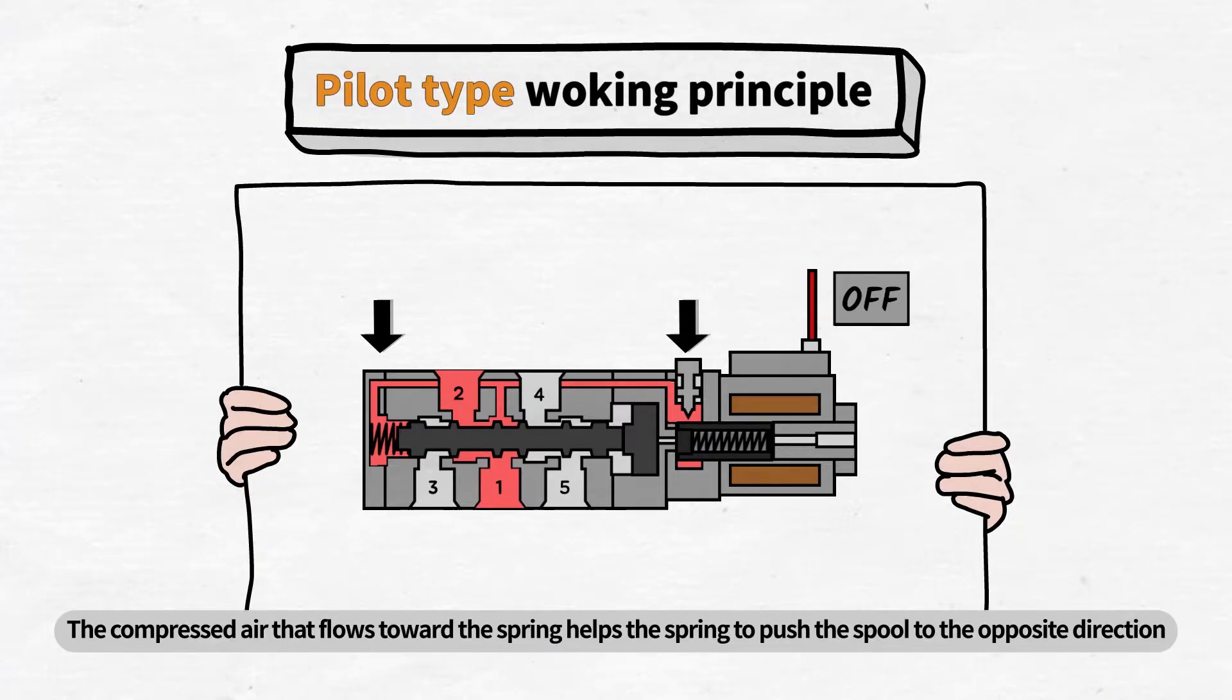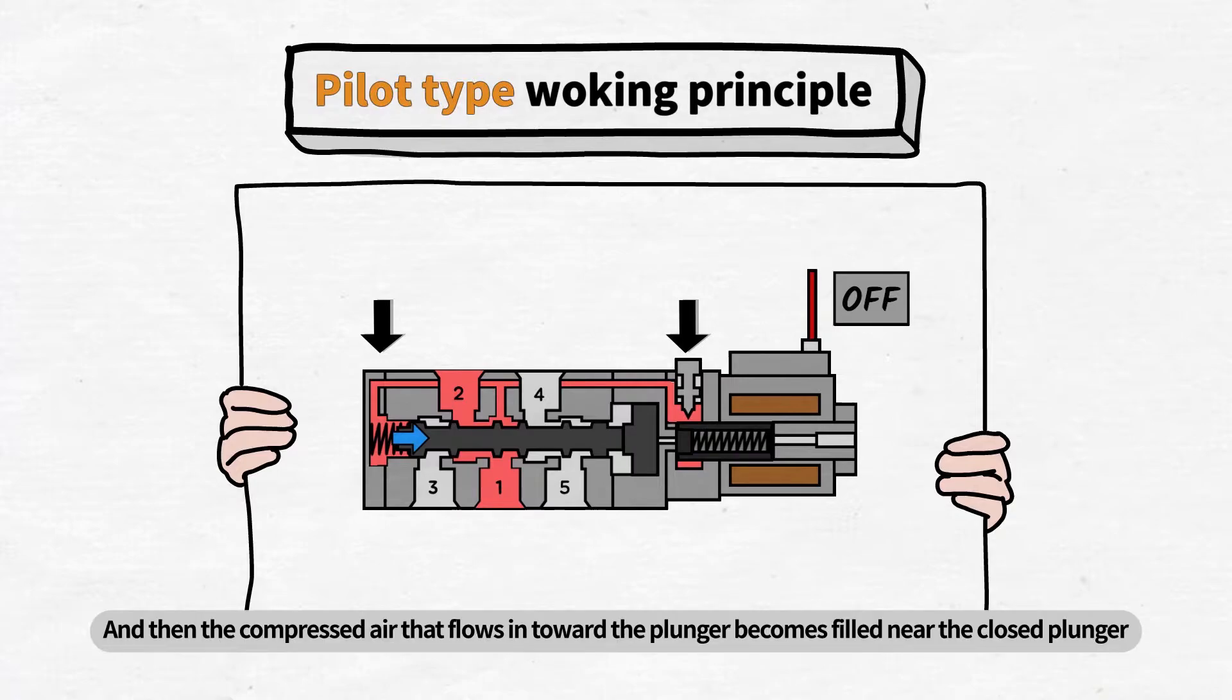The compressed air that flows toward the spring helps the spring to push the spool to the opposite direction. And then the compressed air that flows in toward the plunger becomes filled near the closed plunger.